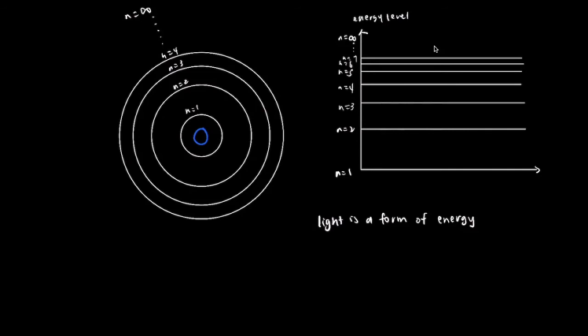These four transitions are from n=3 to n=2, n=4 to n=2, n=5 to n=2, and n=6 to n=2 energy levels. Notice that a downward arrow represents an electron losing energy, while an upward arrow means the electron is absorbing energy.